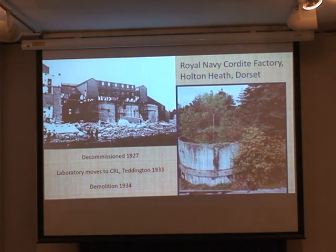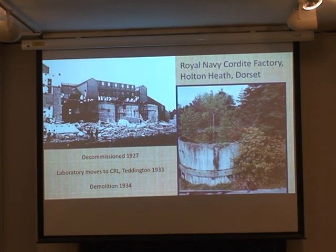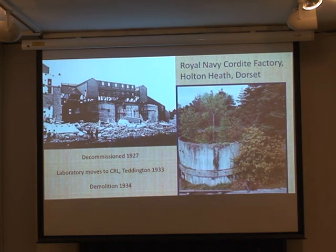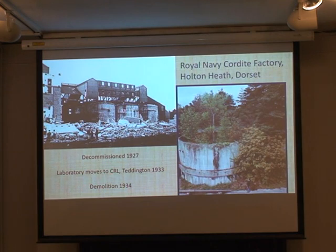The Royal Navy Cordite factory's acetone plant was decommissioned in 1927, but the laboratory stayed there and was very important in terms of its impact on applied microbiology. They did lots of important work and it stayed open until 1933. They were looking into things like using cellulose to produce industrial alcohol. The laboratory then moved to the Chemical Research Laboratory at Teddington in 1933.